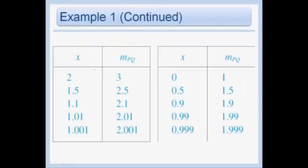To find that limit, let's look at a table of values. As our x point gets really close to 1 from either side — and approaching from both sides is something we'll discuss a lot in this chapter — we see that as x gets really close to 1, our y value gets really close to 2 from both sides, from both larger and smaller values. So now we know our slope is 2.